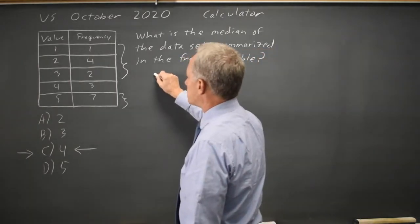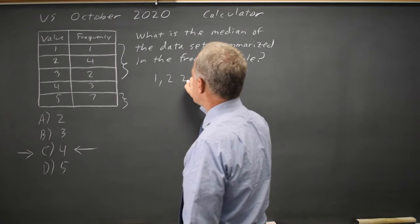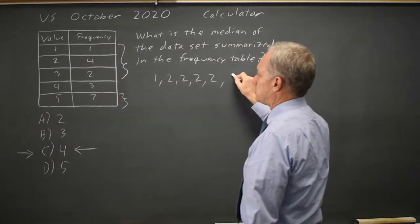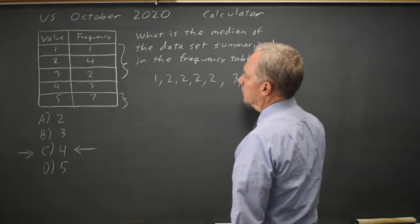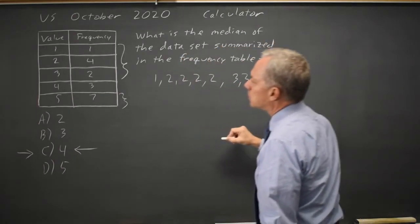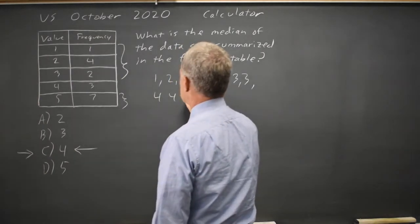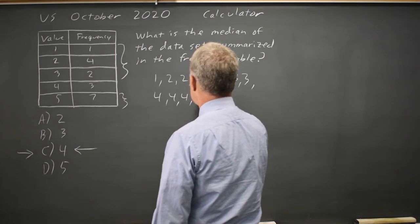Alternatively, we can list the numbers in order, smallest to largest: one one, four twos, two threes, three fours, and then seven fives.